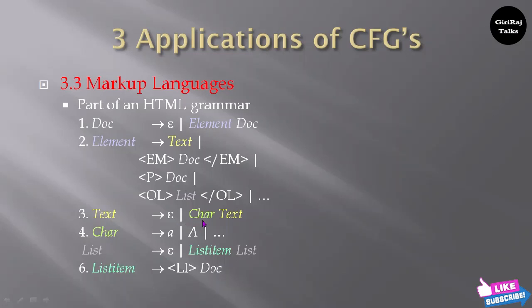Text tends to epsilon, or car — and car. List tends to epsilon, or list item List. List item tends to li list item Doc. So you can write the previous HTML code in the form of productions like this. This is also one kind of application of context-free grammar.